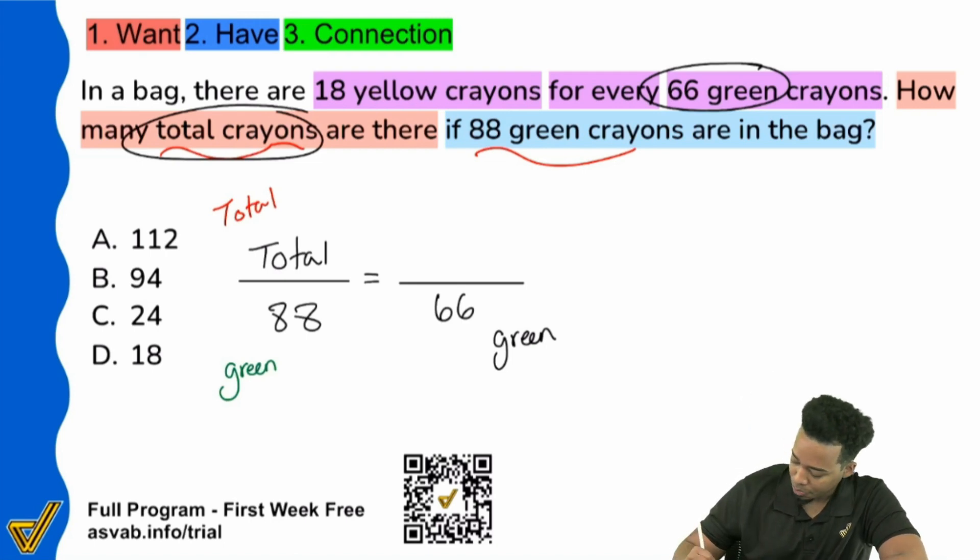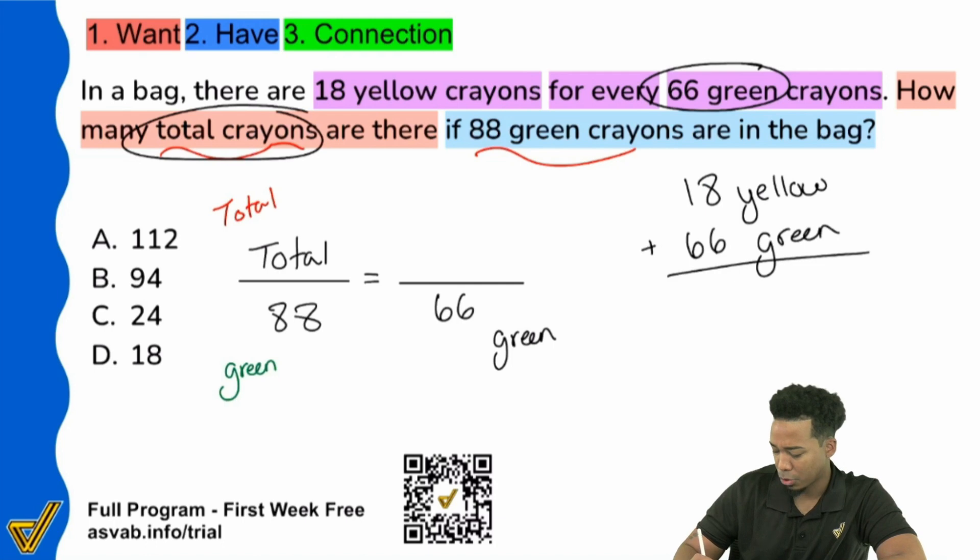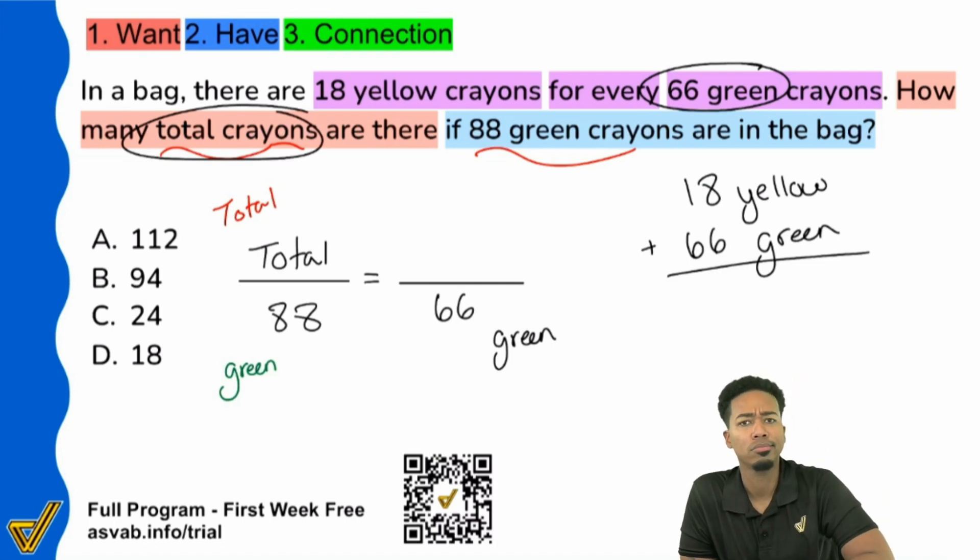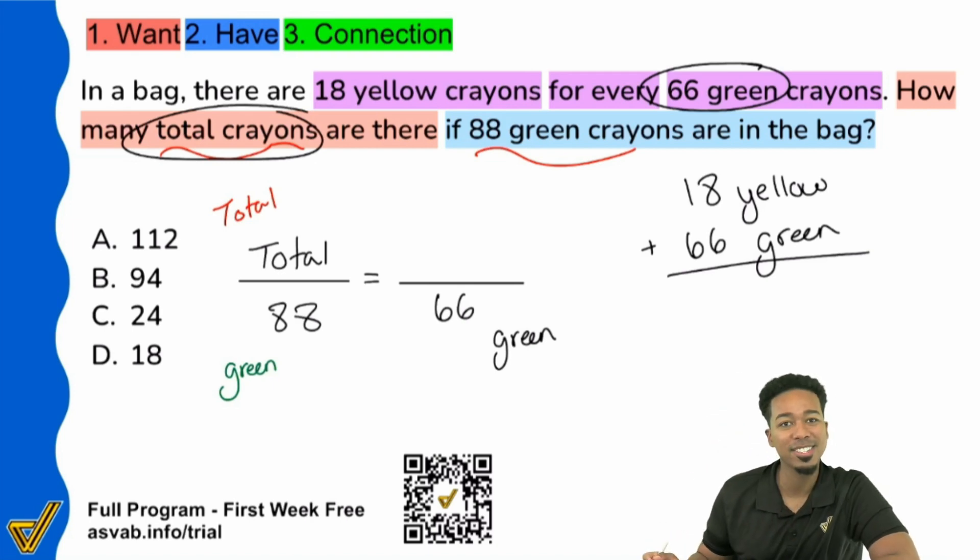So with that said, how do we know what to put? Well, since we have 18 yellow and 66 green, just think about this naturally. How do you get a total? You get a total by adding them all up. So to find the total representation for that sentence, it's going to be 18 plus 66, which is going to give us 76 plus 8, which is 84. So 84 total there.